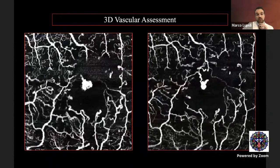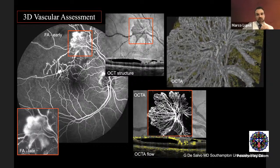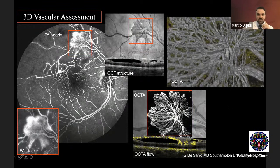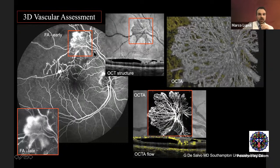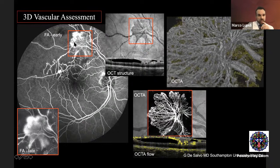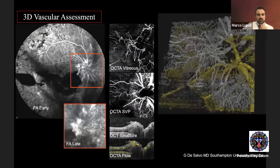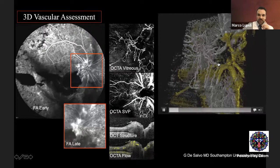The 3D vascular assessment: here we can visualize in 3D mode the neovascularization arising from a patient with branch retinal vein occlusion. The neovascular network arising from the superior temporal arcade is assessed in 3D from a label-free examination. And another example of new vessels at the disc — in white we can observe the new vessels, and in yellow the normal vessels arising from the optic disc.